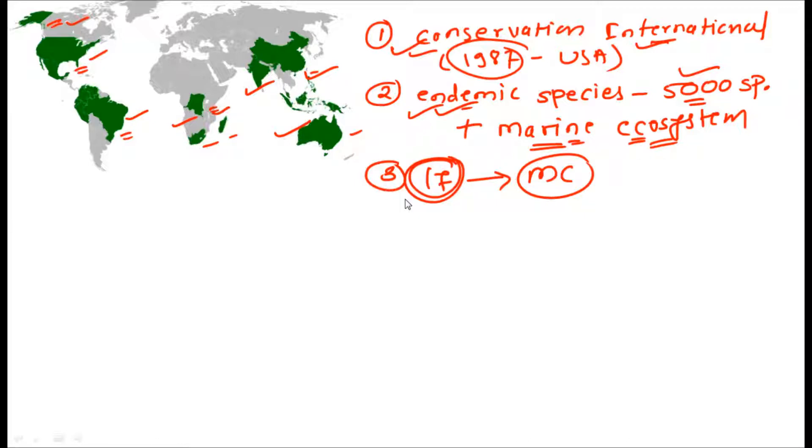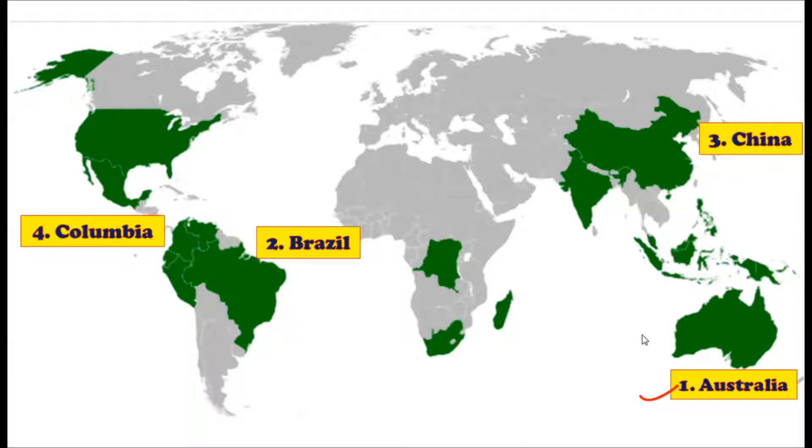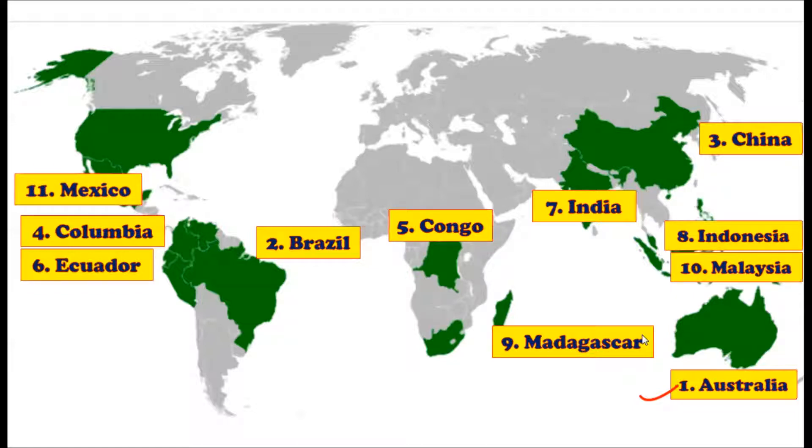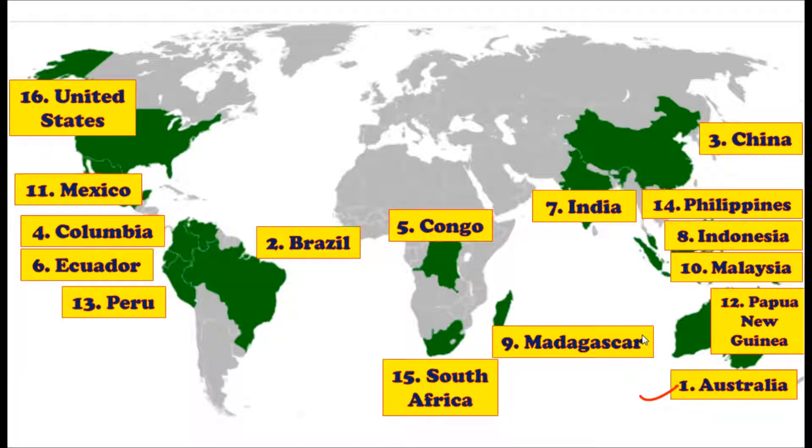Let us see which countries got the megadiverse title. First we have Australia, then Brazil, then China, Colombia, India, Congo, Ecuador, Indonesia, Madagascar, Malaysia, Mexico, Papua New Guinea, Peru, Philippines, South Africa, United States, and Venezuela.